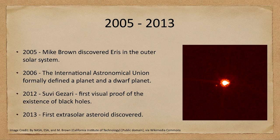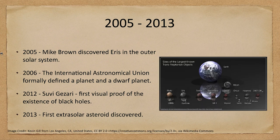Moving into the 2000s, we discovered Eris — a dwarf planet found in the outer solar system, shown here with its moon, not easy to see from Earth. In 2006, we established a formal definition of a dwarf planet, which is where Pluto's classification got changed. We now have several objects classified as dwarf planets: Pluto, Eris, Makemake, Haumea, and others — currently five dwarf planets known.